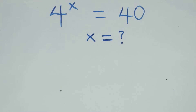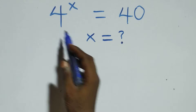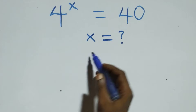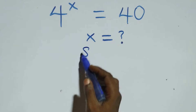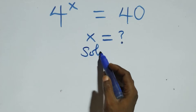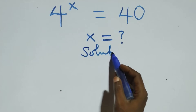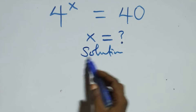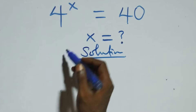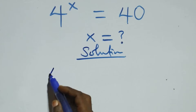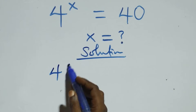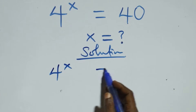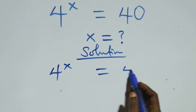Hello, you are welcome. Here we solve this exponential equation. What we have is 4 raised to the power x equals 40.